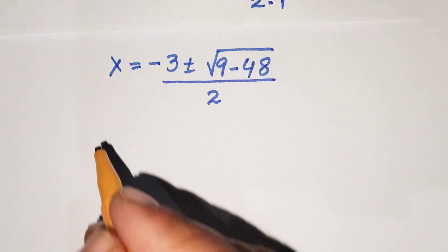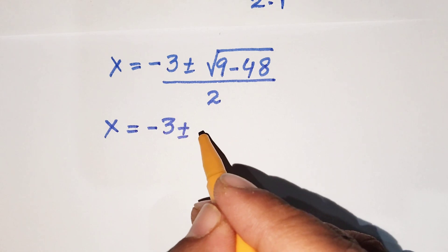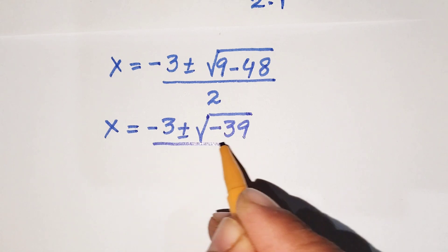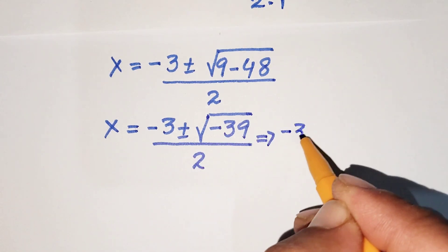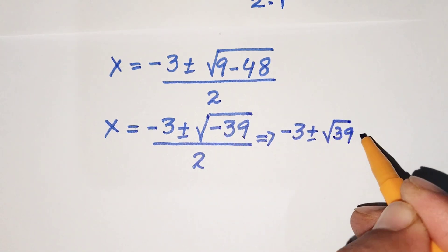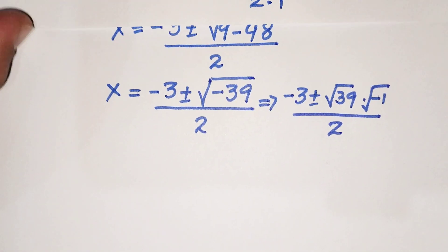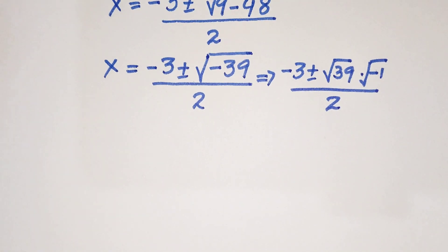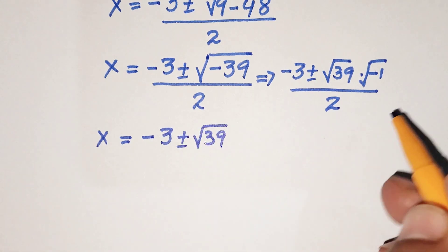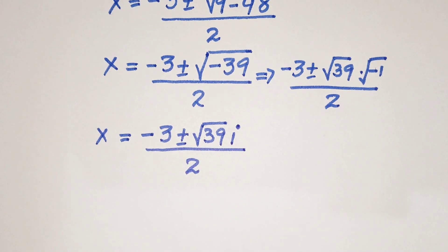Simplifying: 9 minus 48 equals negative 39, so x equals negative 3 plus or minus square root of negative 39, all over 2. We rewrite the square root of negative 39 as square root of 39 times square root of negative 1, and since the square root of negative 1 equals i, we get x equals (negative 3 plus or minus i times square root of 39), all over 2.